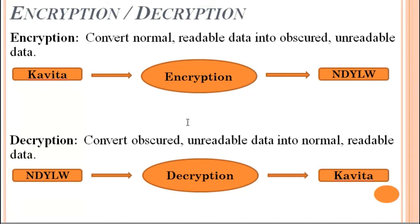Decryption is the process by which we convert a non-readable message into the actual form that anyone can understand — converting obscured, unreadable data into normal readable form. For example, 'N-D-Y-L-W' is a non-readable form; when we apply a decryption algorithm, we obtain 'Kavita', which we easily understand is a girl's name. Encryption and decryption are the inverse processes of each other.